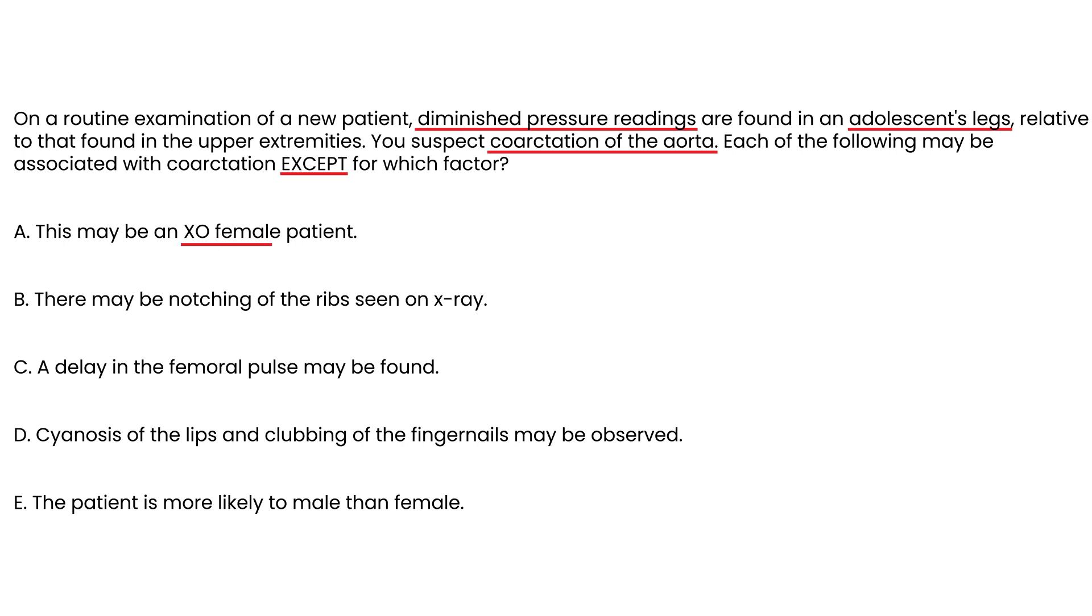This may be an XO female patient - it's possible, because XO is a karyotype in Turner's, so that's right. There may be notching of the ribs seen on x-ray - that's correct, because a large volume of blood through the intercostal arteries results in gradual erosion of those adjacent bones. A delay in femoral pulse may be found - that's correct. Cyanosis of lips, clubbing of the fingernails? Lips and fingernails? No. Patient is more likely to be male than female? Yes, male to female is about 2 to 1. So by our process of elimination, we've come to choice D as the correct answer.